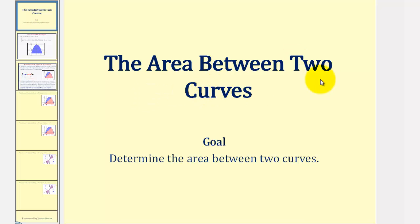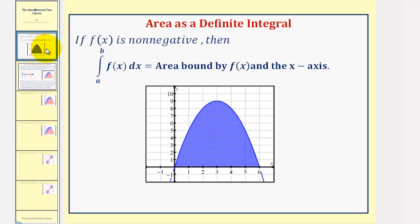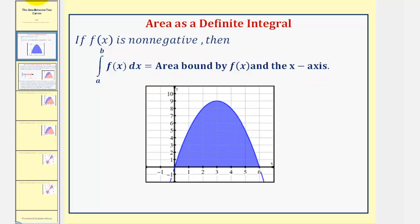Welcome to a lesson on the area between two curves. For review, if f of x is non-negative, then the definite integral of f of x with respect to x from a to b gives us the area bounded by the function and the x-axis. Looking at our graph, if we integrated this blue function from zero to six, the function is non-negative on this interval, and therefore the definite integral gives us the area of the shaded region.